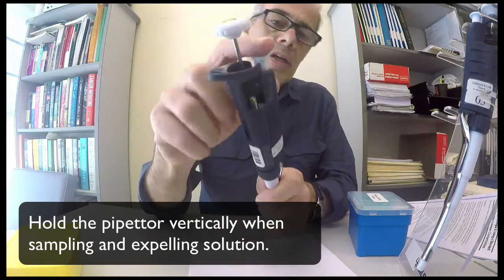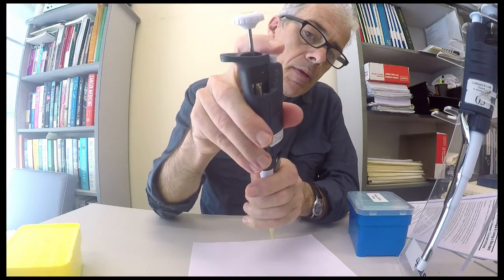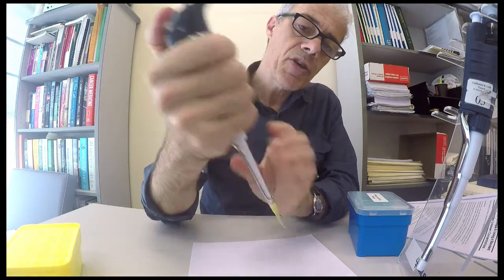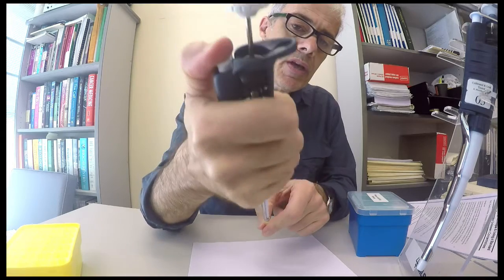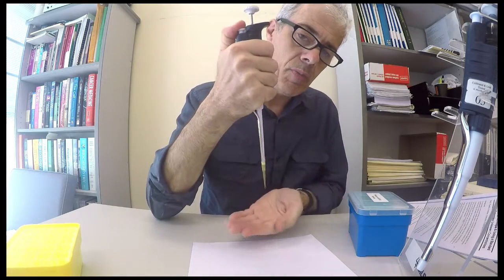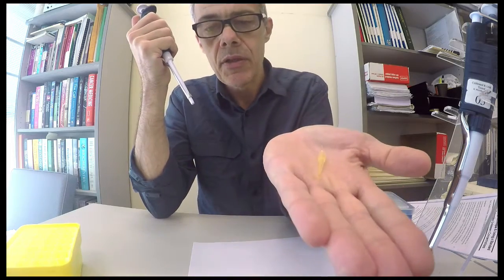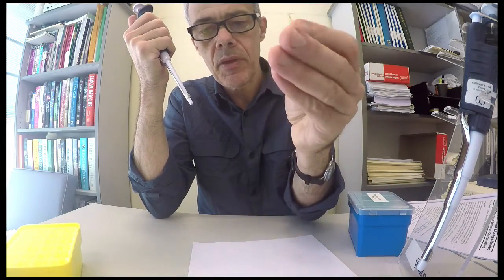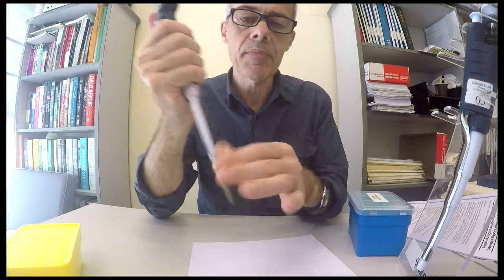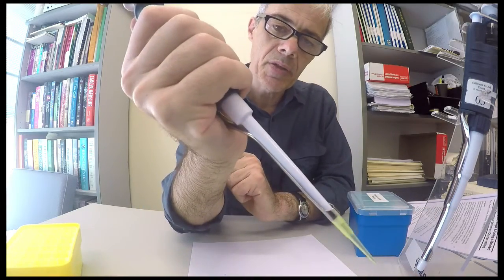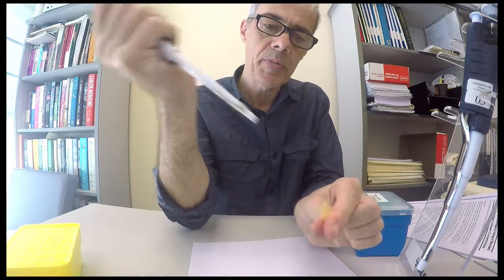To remove the tip, there's a button here. If you just put a bit of pressure down on your finger, it'll just pop the tip off. So there we go. So normally you'd have a waste bin and you would just dispense your tip into the waste bin.